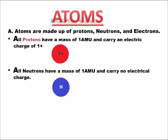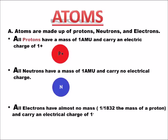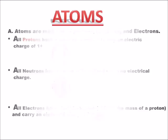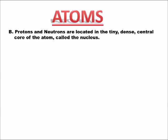Just like the proton, the neutron has a mass of one, but it doesn't carry an electric charge. All electrons have almost no mass — in fact, the mass of an electron is about one 1,832nd of the mass of a proton. Each electron carries an electrical charge of negative one. You can see this electron has a negative sign on it because it carries a negative electric charge.